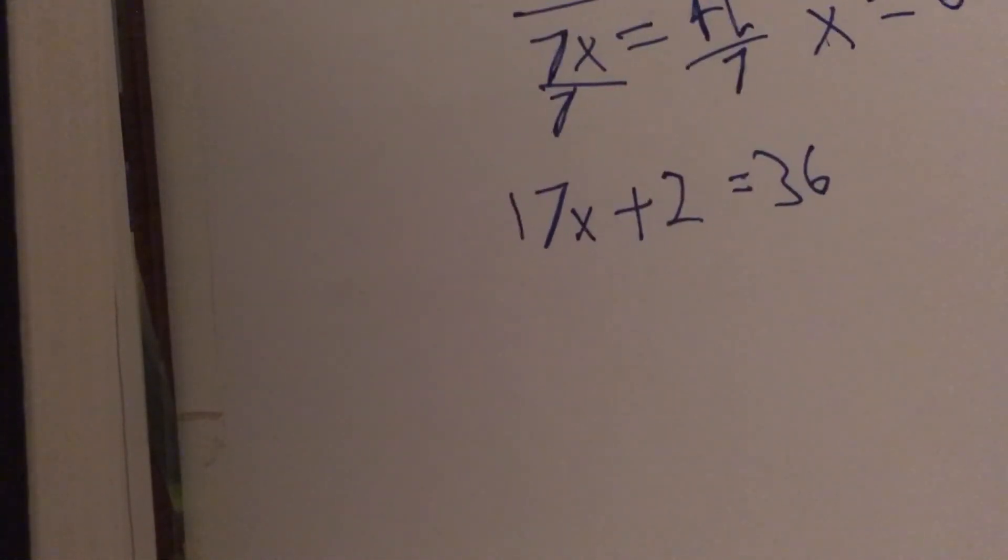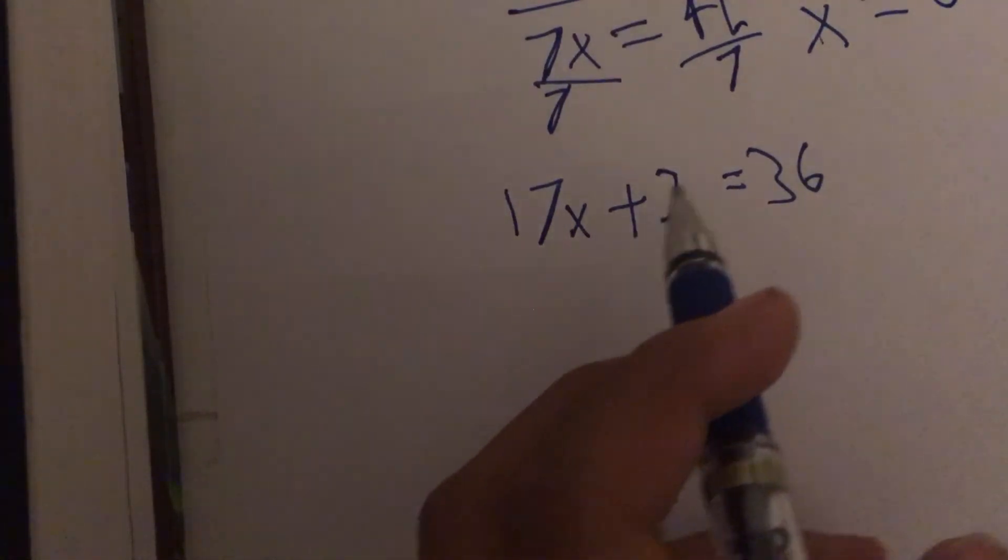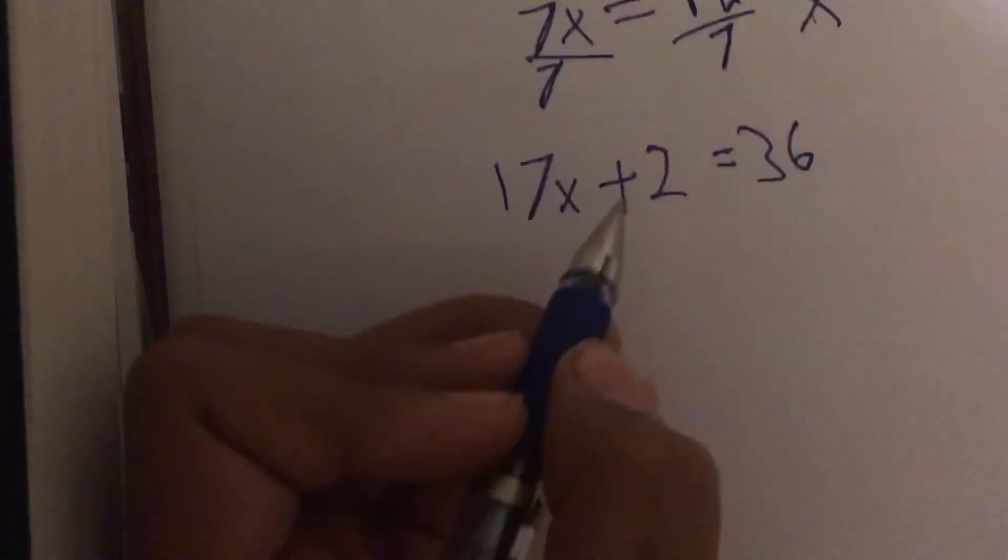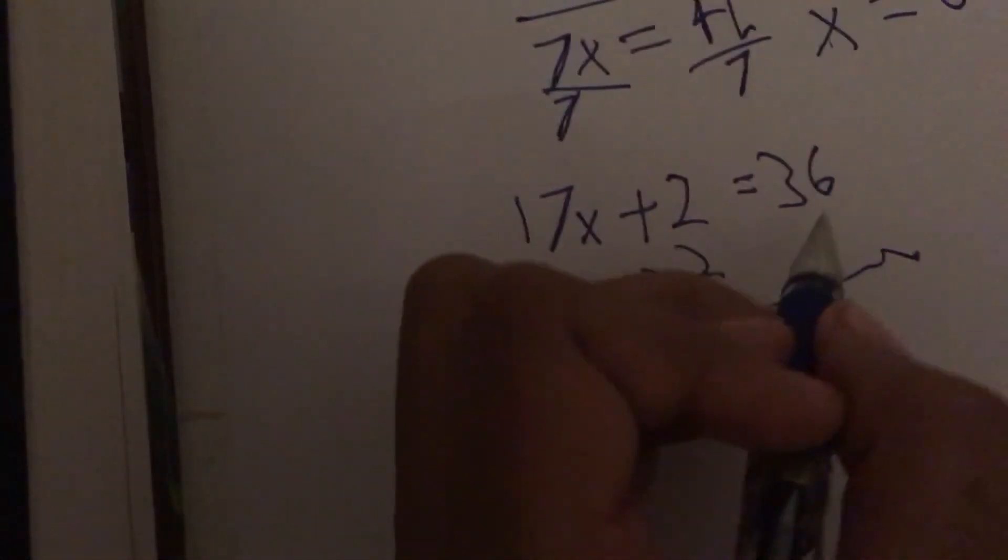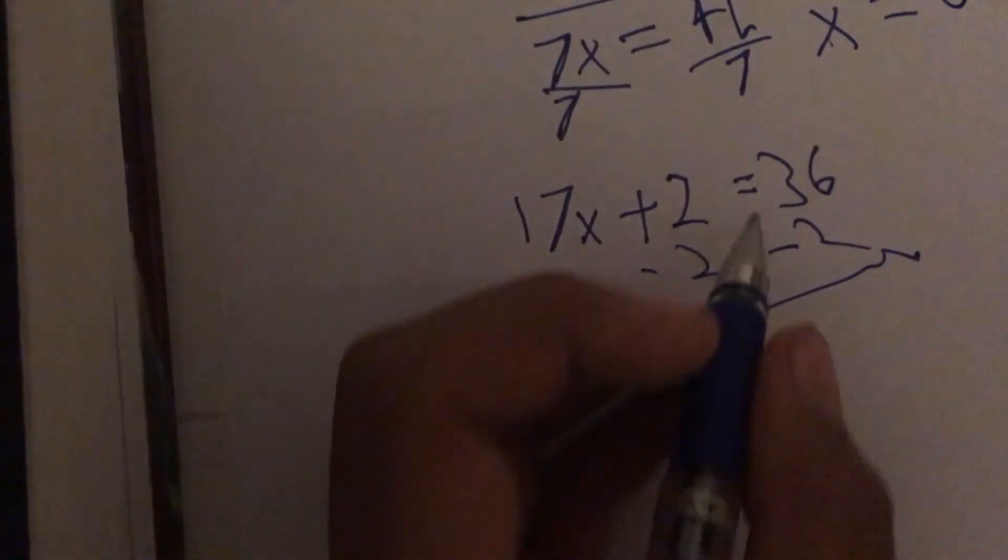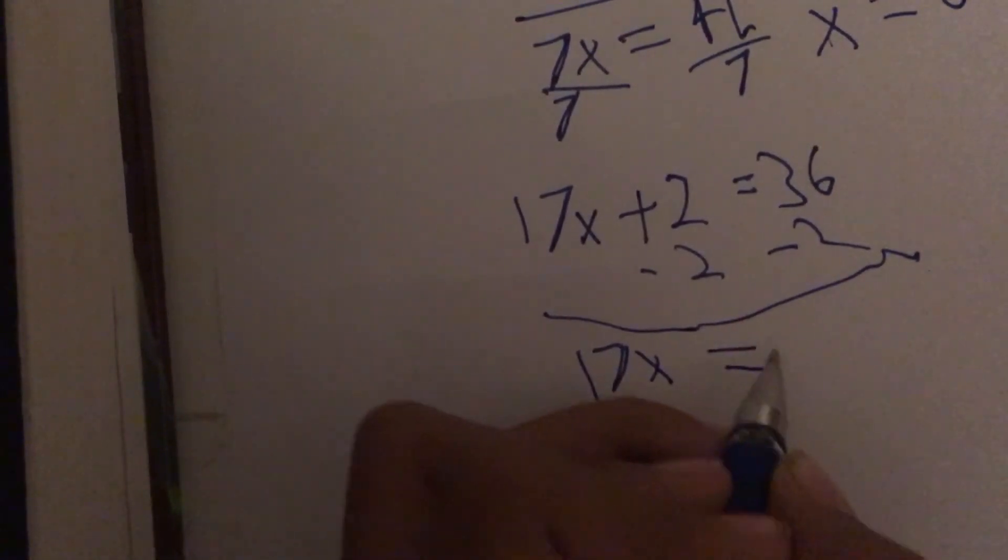For our final one, we have 17x plus 2 equals 36. Now, all we have to do is subtract 2 from both sides, then you're going to get 17x equals 34.